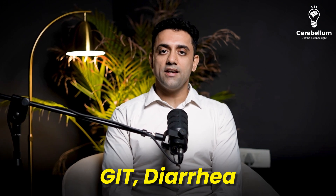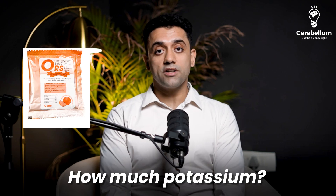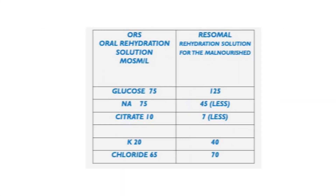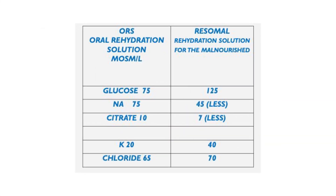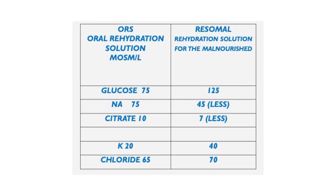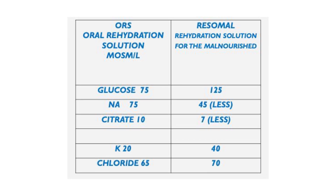GIT — diarrhea. Which is the most common cause of diarrhea? The answer is Rotavirus. How much potassium is in ORS? Potassium is 20, sodium is 75, glucose is 75, citrate is 10, and chloride is 65.